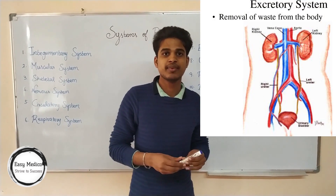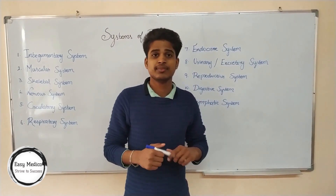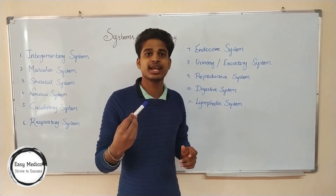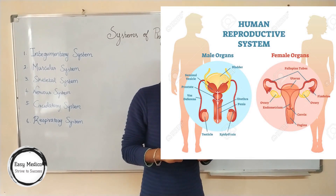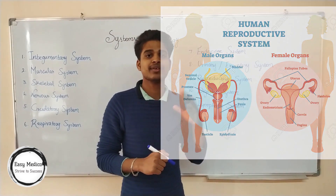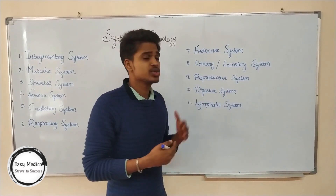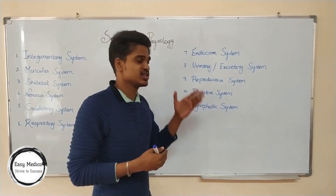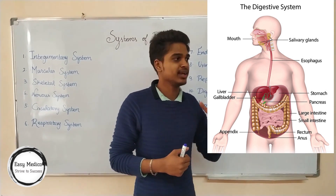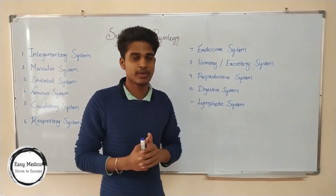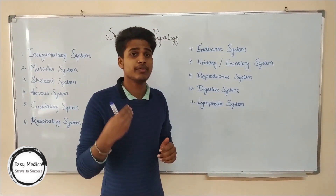Then the excretory system, which is responsible for elimination of metabolic waste in the form of urine and faeces. The kidney plays an important role, as it eliminates toxic material from the body in the form of urine. The reproductive system consists of male and female reproductive organs that combine to give birth to new offspring; it also consists of some hormones and fluids. Then the digestive system, whose main part is the alimentary canal, running from the mouth to the anus.